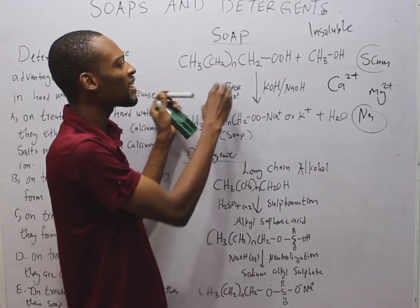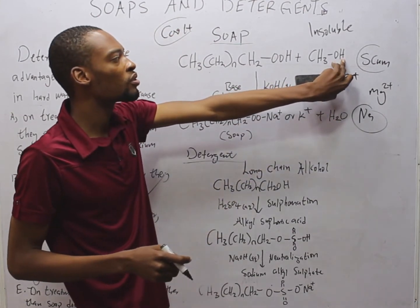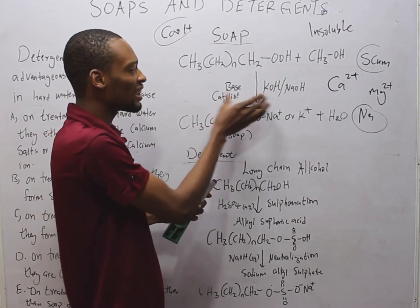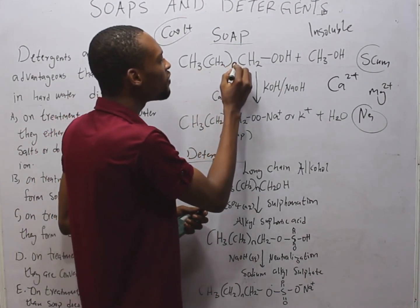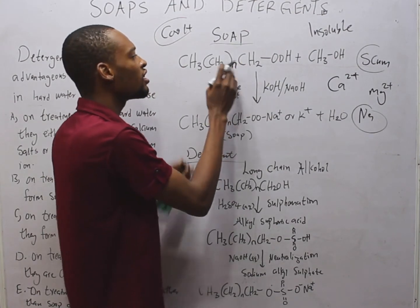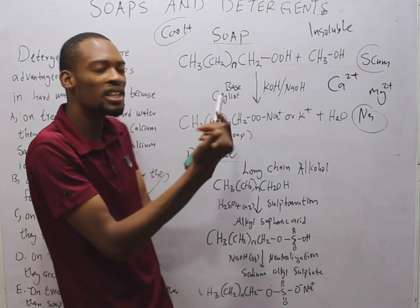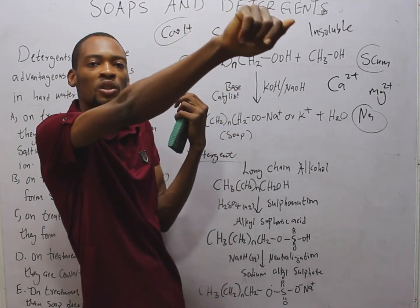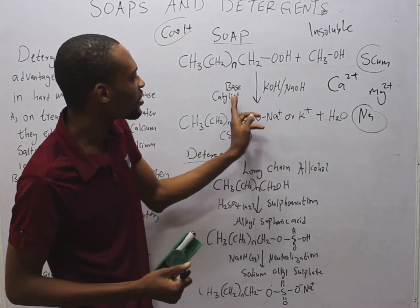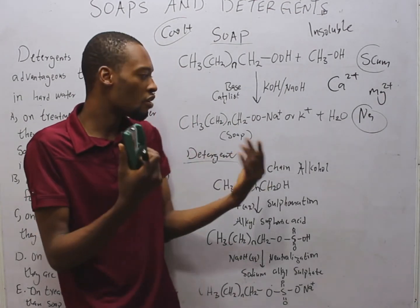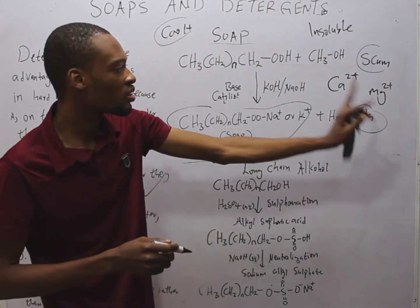The long-chain fatty acid or carboxylic acid — COOH — reacts with the OH group of alcohol. A base is added as a catalyst: KOH or sodium hydroxide. CH₂ₙ means a very long chain — if N is 500, it means we have CH₂ repeated 500 times. To summarize it, we put N here; it can be any large number. The reaction forms a sodium salt based on the catalyst. Catalysts boost or reduce the rate of reaction. This sodium salt formed is the soap, and water is also formed.